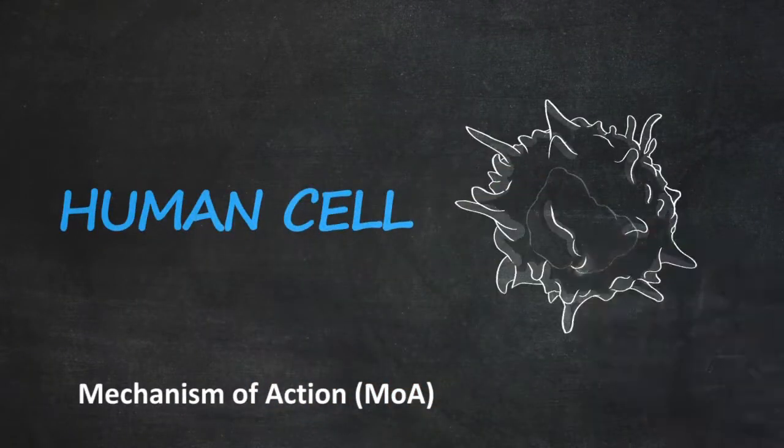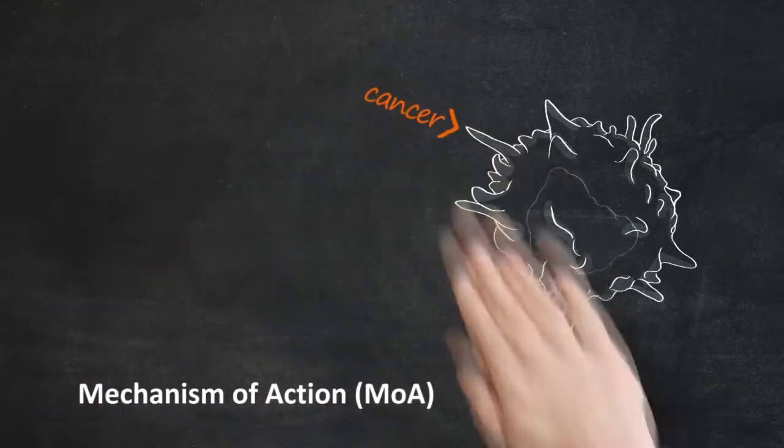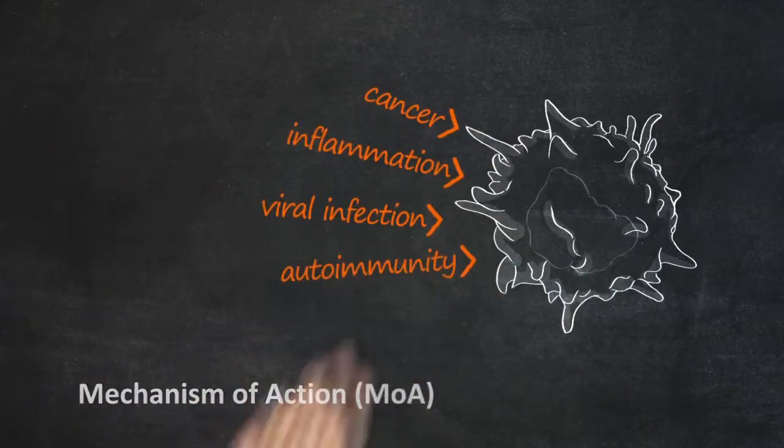A human cell, when influenced by various environmental factors, can deviate from its normal function.